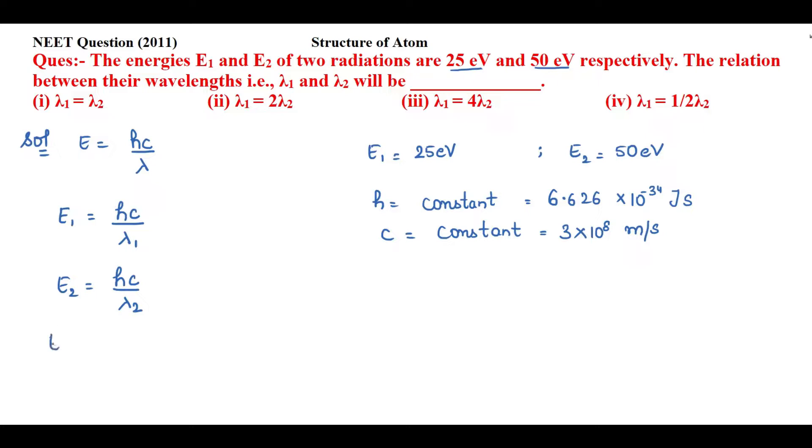I can write E₁/E₂ = (hc/λ₁)/(hc/λ₂). When E₂ is in the denominator, the relation will be reversed, so λ₂ will be in the numerator and hc in the denominator. I'll cancel hc with hc because these two values are constant.